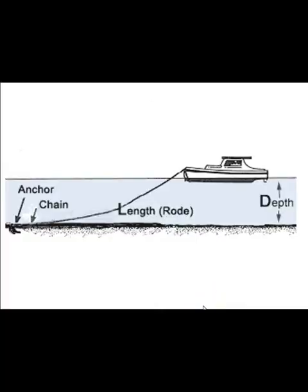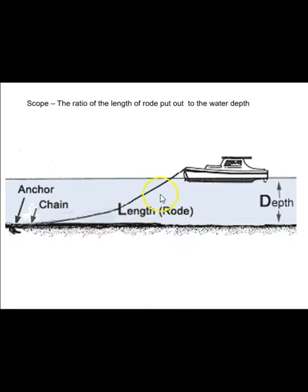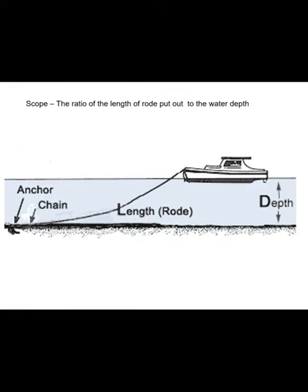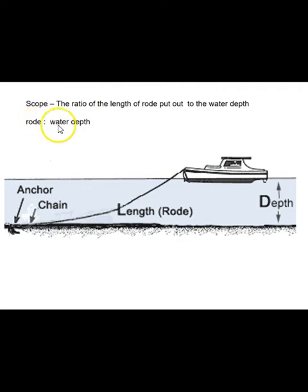The first definition is scope — scope is the ratio of the length of the rode put out to the water depth. The rode is defined as all the stuff between the anchor and the boat: chain, fiber, or whatever kind of rode you have. Typically for big ships it's going to be chain; for small boats it'll be a little chain and then some kind of fiber rope. We express scope as a ratio, typically 5 to 1 or 7 to 1.